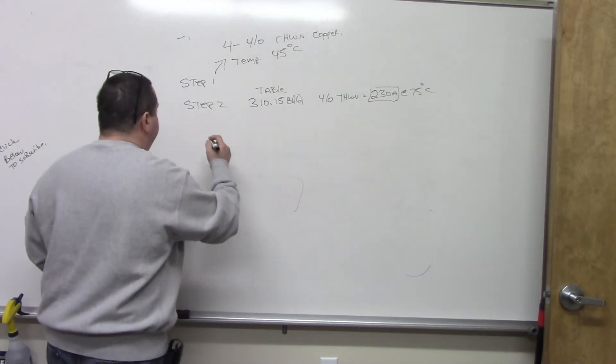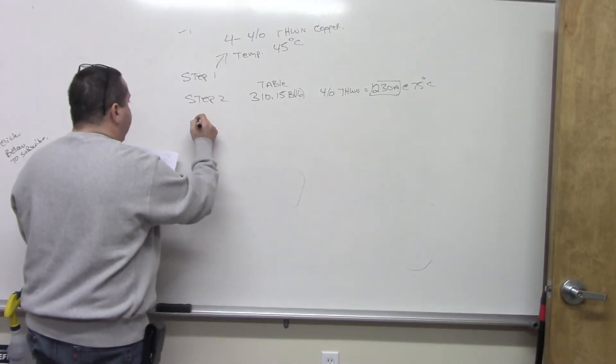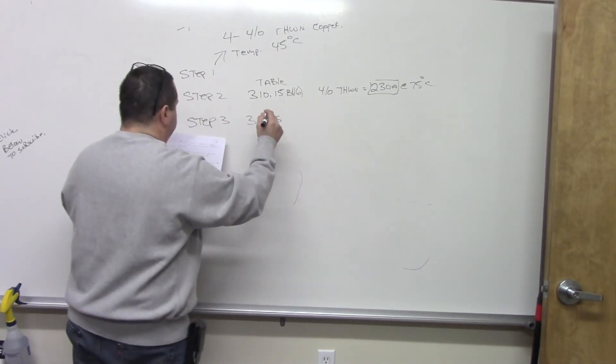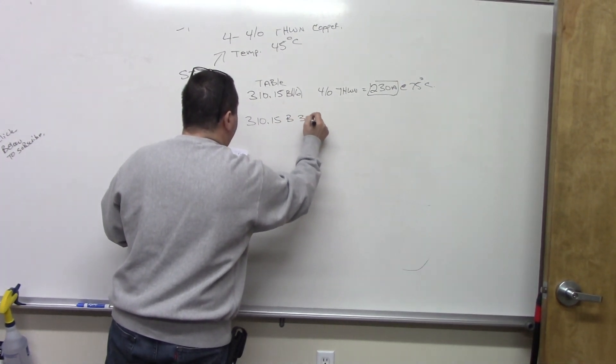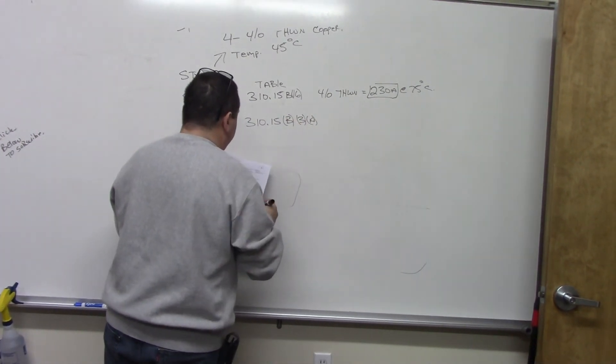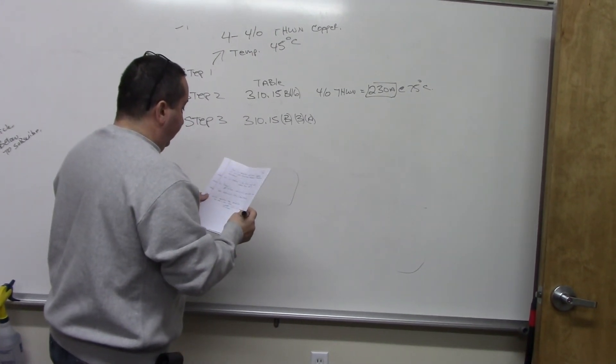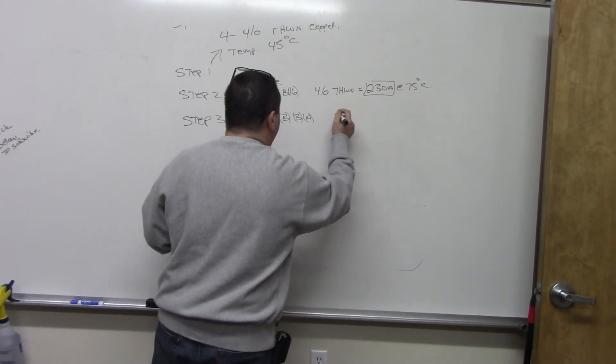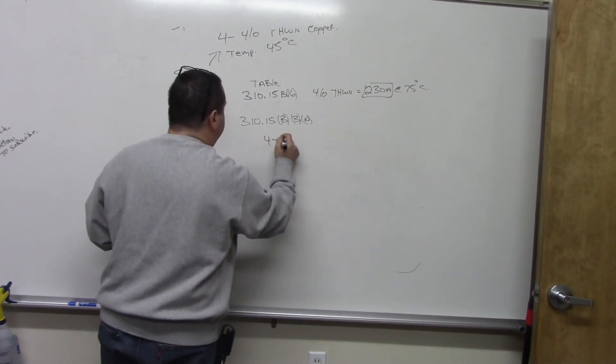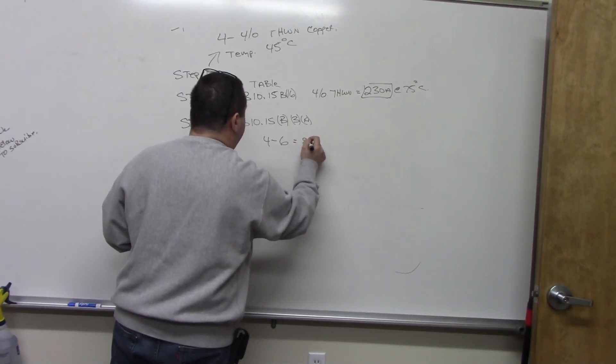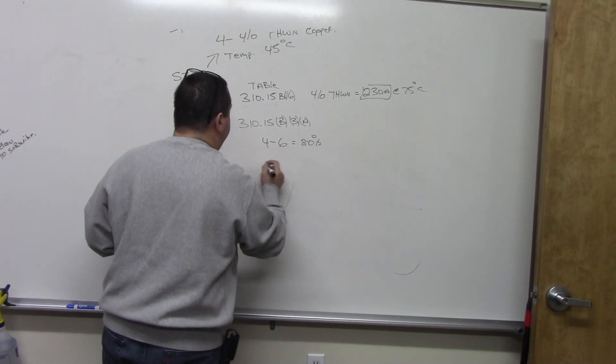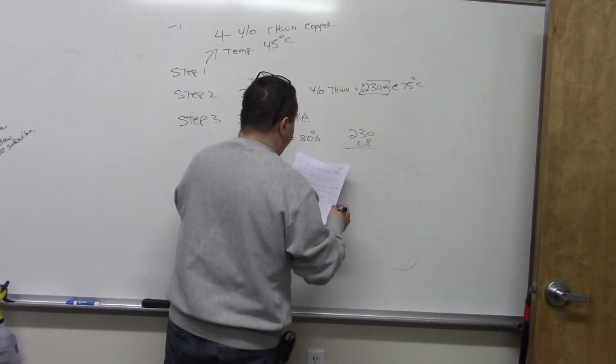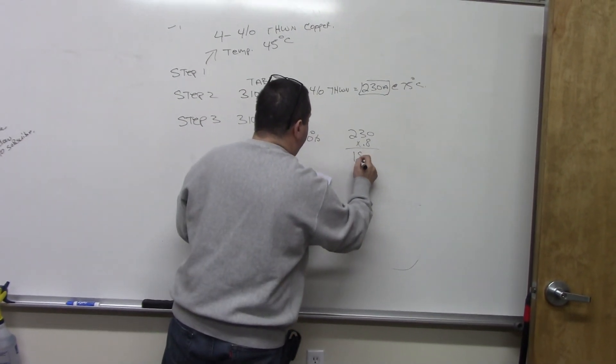For the adjustment factor, step three, we go to 310.15B3A. We look that up and find out that for four current carrying conductors, four to six is equal to 80%. So we take the 230 times 0.8, which equals 184 amps.